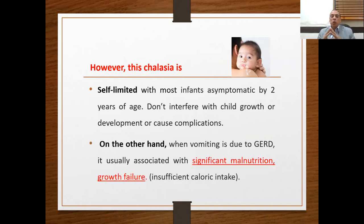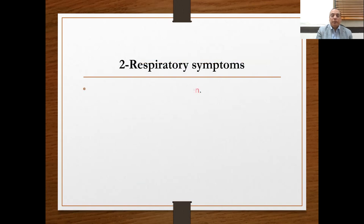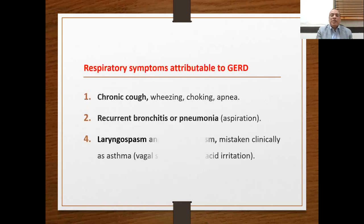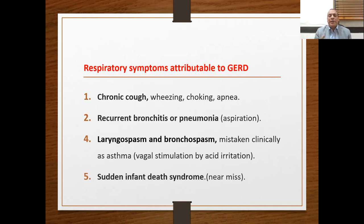When vomiting is due to GERD, it is usually associated with severe malnutrition and gross failure due to insufficient caloric intake. Respiratory presentation is very common. Excluding GERD as a cause for respiratory symptoms is very challenging due to the similarity of symptoms, and because aspiration may be caused by oropharyngeal dysmotility rather than GERD. Respiratory symptoms attributed to GERD include chronic cough, wheezing, choking apnea, recurrent bronchitis or pneumonia, laryngospasm, bronchospasm, or sudden infant death syndrome — also called near infant death.